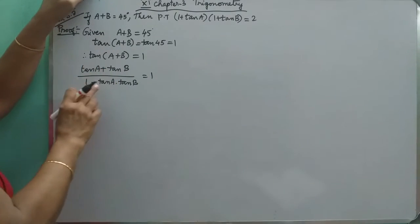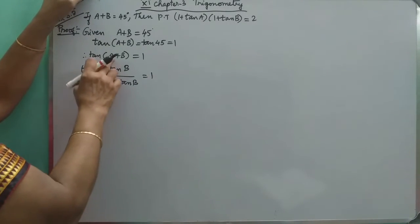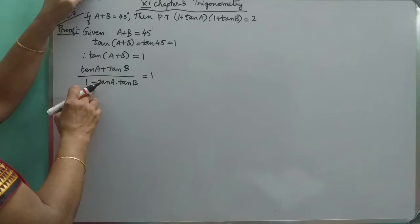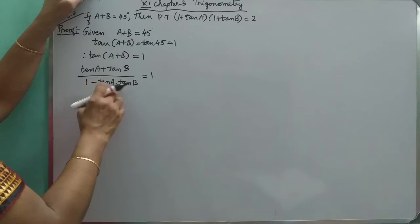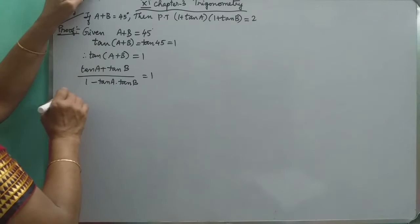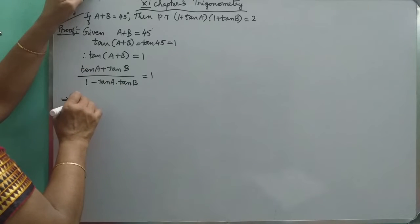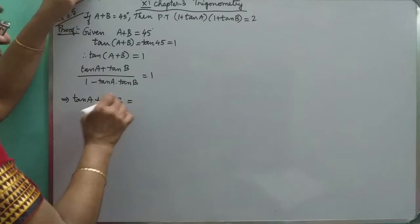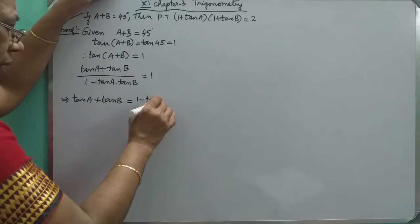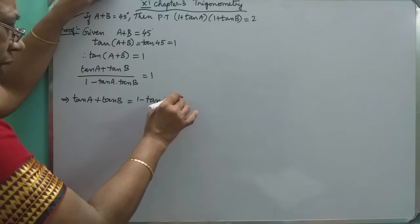Here plus B comes here, minus here. Two tan A tan B, tan A plus product. Cross multiply and we will be getting tan A plus tan B is equal to 1 minus tan A into tan B. Okay.